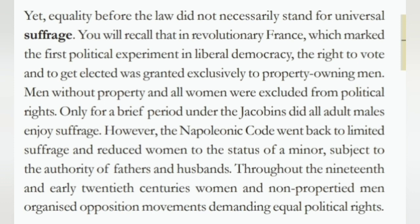Yet equality before the law did not necessarily stand for universal suffrage. In revolutionary France, which marked the first political experiment in liberal democracy, the right to vote and to get elected was granted exclusively to property-owning men. Men without property and all women were excluded from political rights. Only for a brief period under the Jacobins did all adult males enjoy suffrage. However, the Napoleonic Code went back to limited suffrage and reduced women to the status of a minor subject to the authority of fathers and husbands. Throughout the 19th and early 20th centuries, women and non-propertied men organized opposition movements demanding equal political rights.